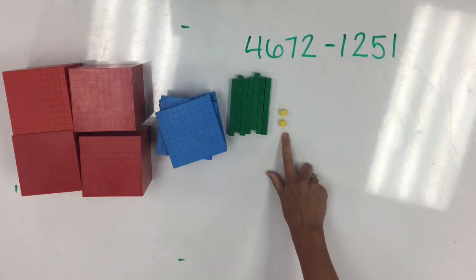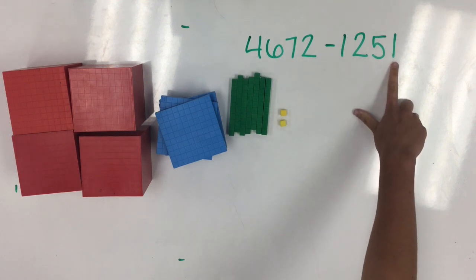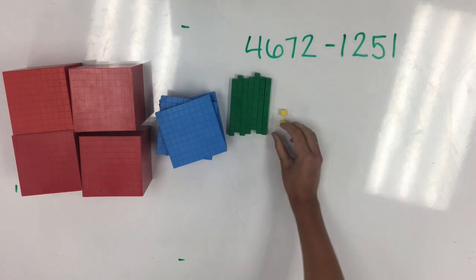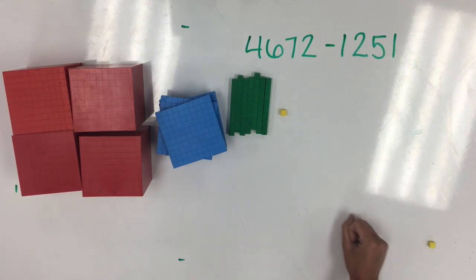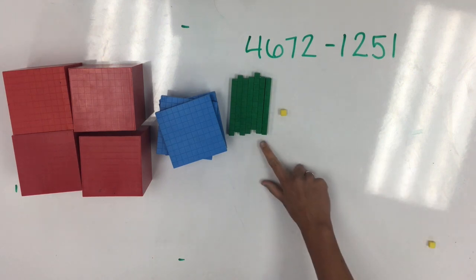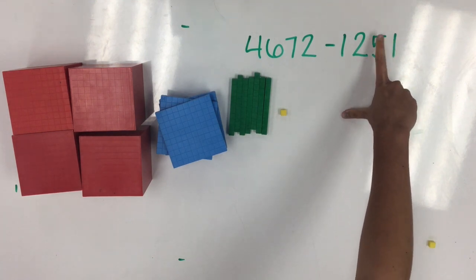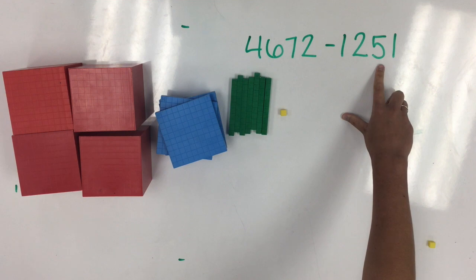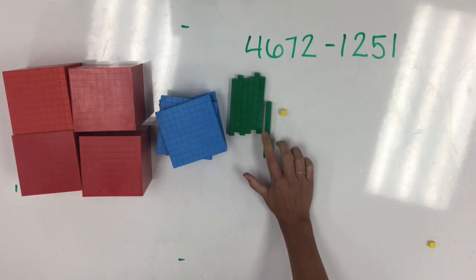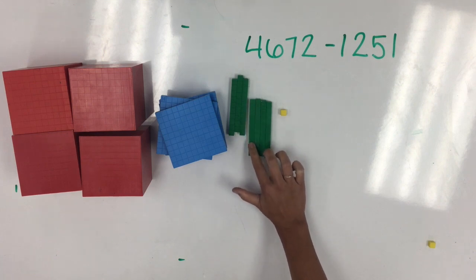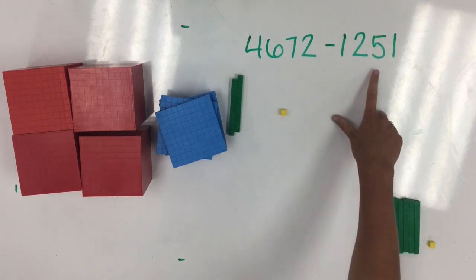First, I'm going to start in the ones place. Because here I'm taking away 1, I'm going to remove 1 from the ones place. Next, I go over to the tens place. If we look at our number that we're subtracting, we have 5 tens that we're taking away. So, from my starting number, I'm going to take away 1, 2, 3, 4, 5 tens for a total of 50.